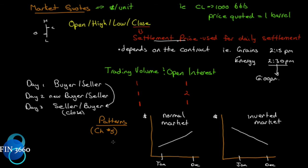Now let's look at patterns — we'll cover these more in chapter five, but I'll introduce the concept. An upward-sloping futures curve is called a normal market — you plot prices for each successive month and the curve slopes upward. Sometimes the front month is priced higher and each subsequent month is priced lower — this is called an inverted market. These also go by the terms contango and backwardation, which refer to the same shapes but for different underlying reasons.